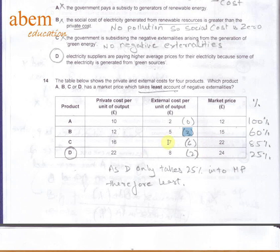Nearly 85 percent. And then part D: 22 plus 8 should be 30, but we've got 24. So 2 pounds of the externality has been taken into account. 2 pounds of 8 is 25 percent. So as D only takes 25 percent, which is lower than all the other three products, it is the answer. Question number 15 is straightforward.